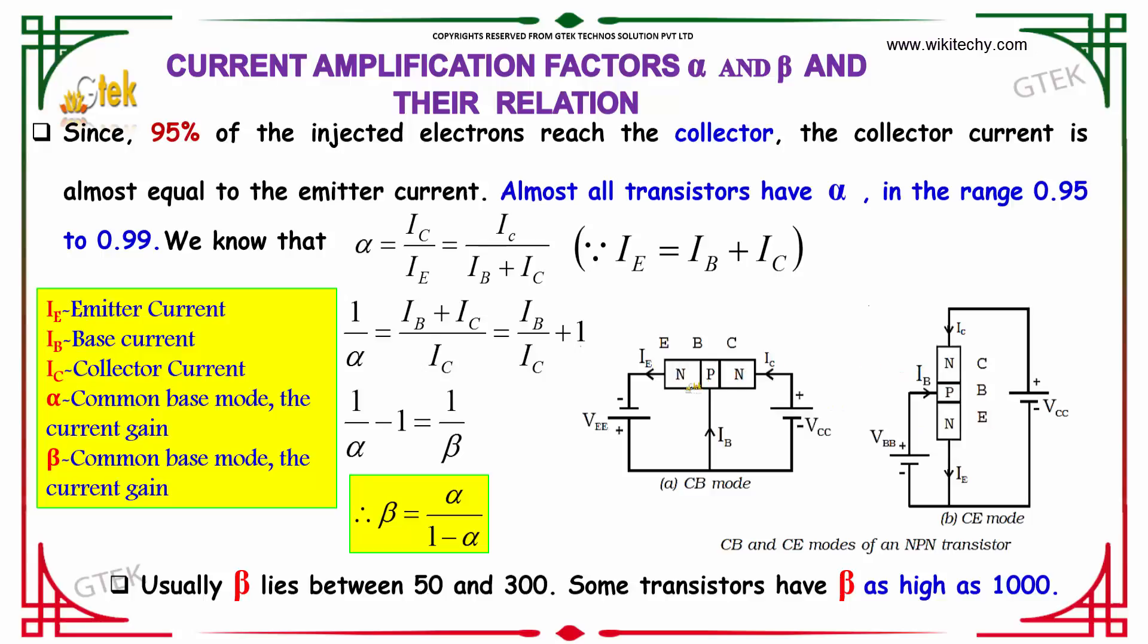Since 95% of the injected electrons reach the collector, the collector current is almost equal to the emitter current. Almost all transistors have alpha in the range of 0.95 to 0.99.